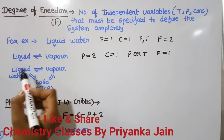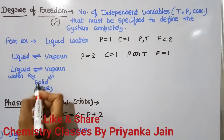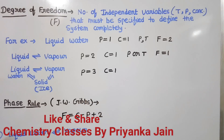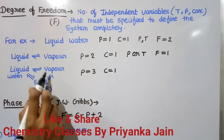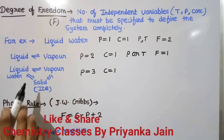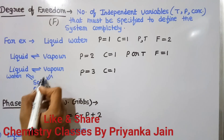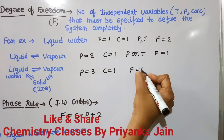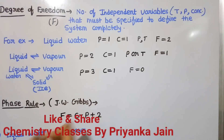Now consider the condition when three phases are in equilibrium: liquid water, water vapors, and solid water (ice). This happens at the triple point. The phases are three and the component is only one, H₂O. At this point, we cannot vary the pressure — if we vary either pressure or temperature, the system is disturbed and only two phases remain in equilibrium. There is exactly one pressure and one temperature at which all three phases remain in equilibrium. So the degree of freedom is zero.